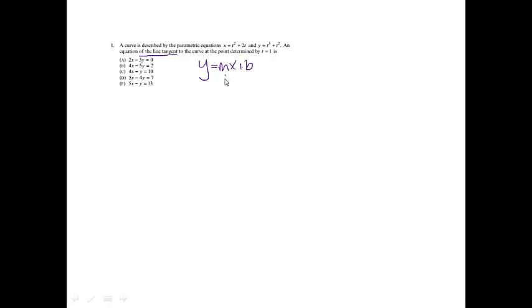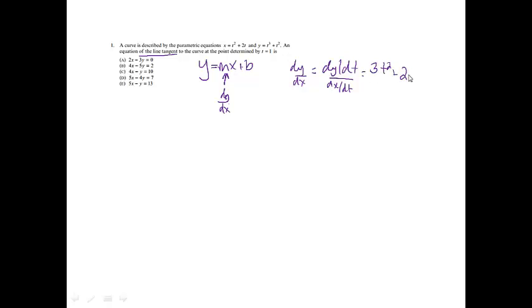We need an equation of the tangent line, so we need y equals mx plus b. In this case, m would be dy/dx. So dy/dx equals dy/dt over dx/dt. dy/dt will be 3t squared plus 2t, and dx/dt is 2t plus 2, and it's at t equals 1.